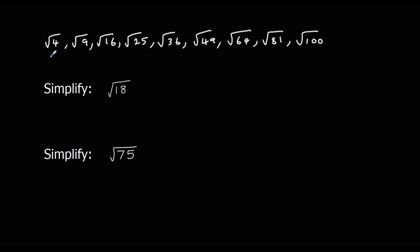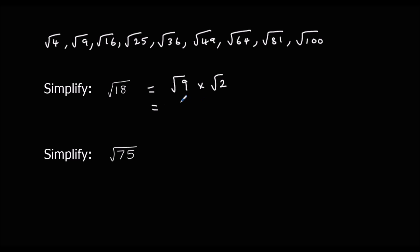At the top here we've got all of our square numbers. In order to simplify a surd, we look for the biggest square number that is a factor of our number. Here we've got 18, and square root 9 is a square number — 9 is a factor of 18. So square root 18 is square root 9 multiplied by square root 2. Square root 9 is 3, so that gives us 3 root 2.